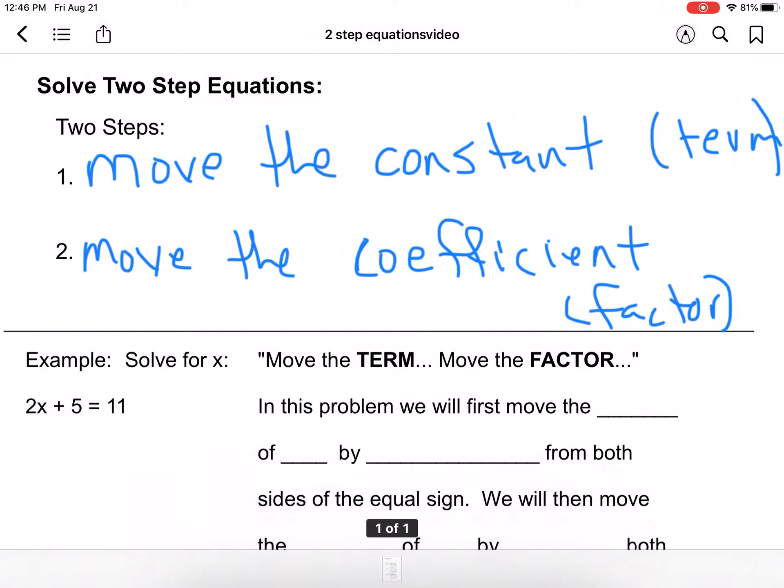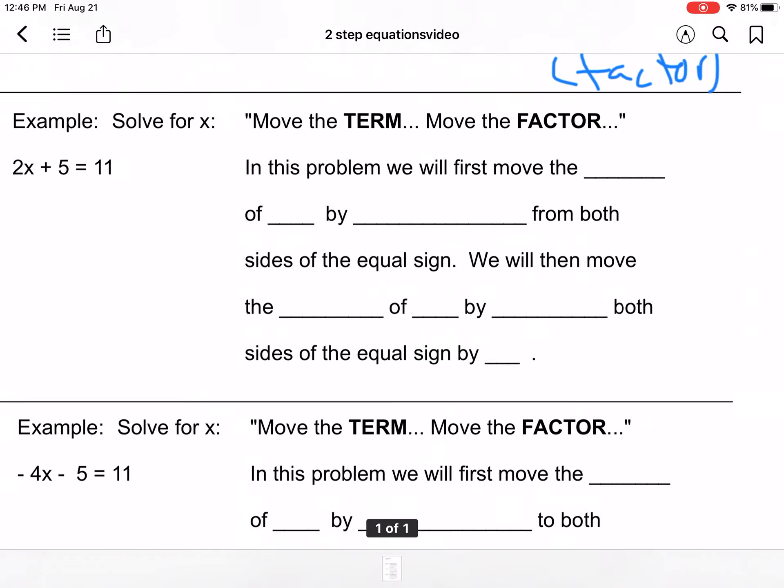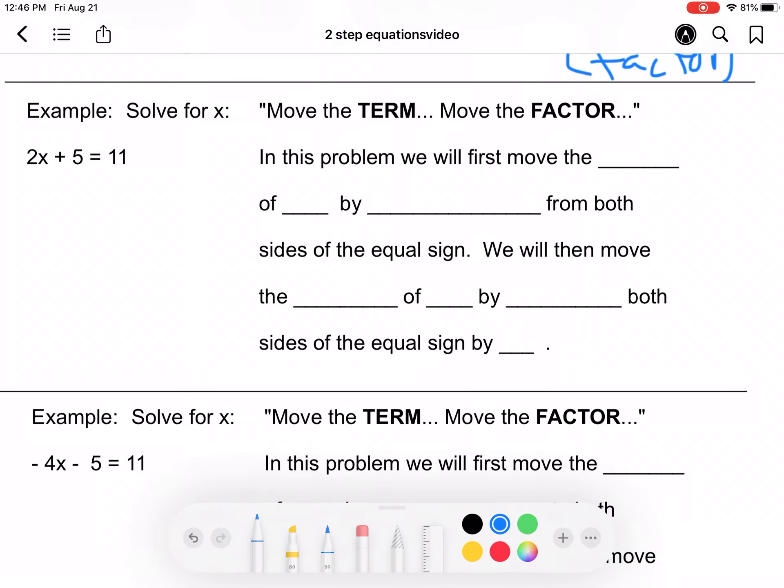So if we look at our first example here, we have 2x plus 5 is equal to 11. So in this problem, we will first move the term or the constant. And I would prefer you use the word constant because you're going to hear that word more often. So that is the constant. And the constant is the number that is by itself without the variable, so that would be the 5.